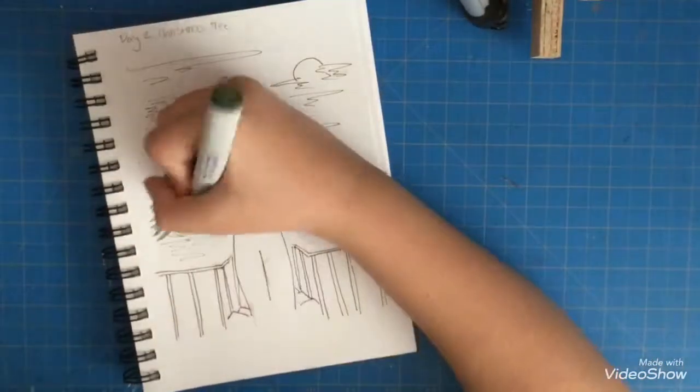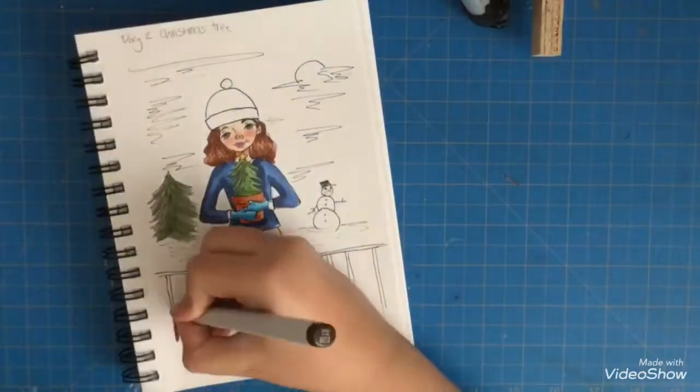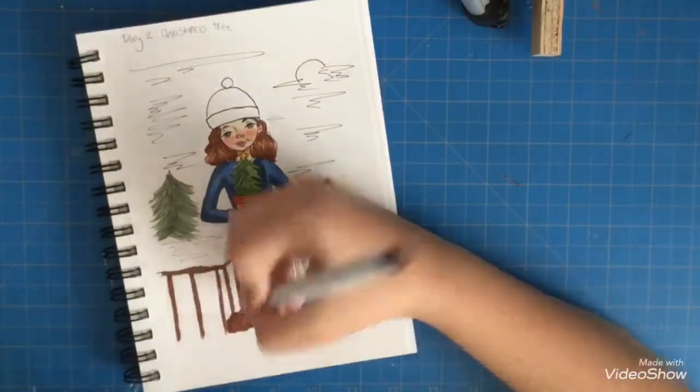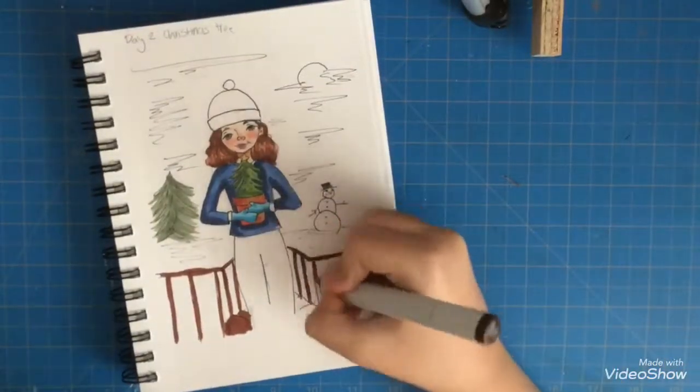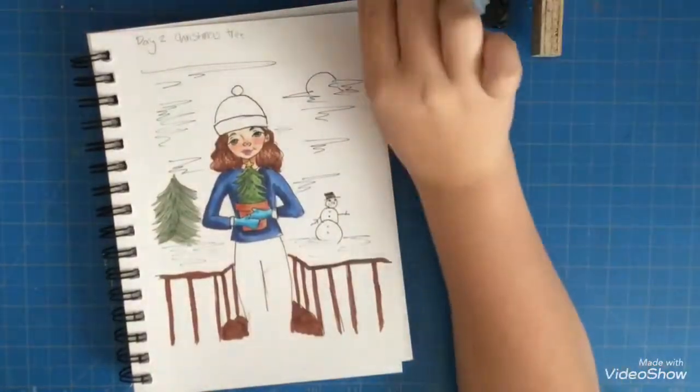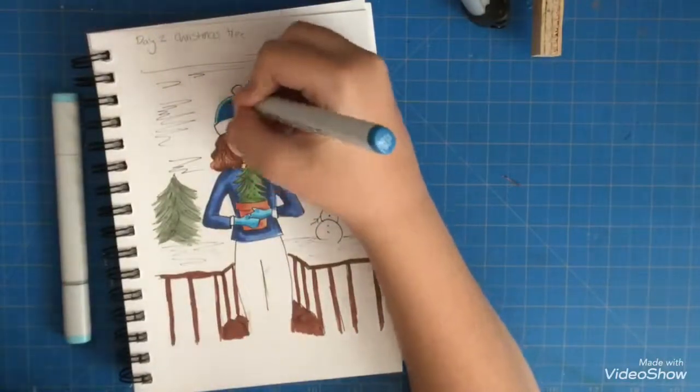I'm using a Canson mixed media sketchbook in a very fun little size. I never tried this size before—normally I get the seven-by-ten ones, but this one is five-and-a-half by eight-and-a-half, I think. It's just a bit smaller, but I really like this size. It's very compact.